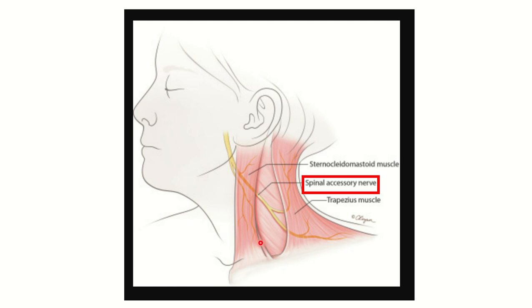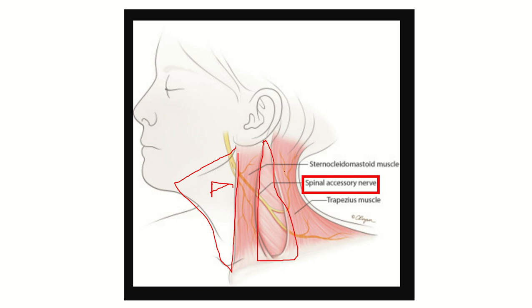We can see a triangular area known as the posterior triangle of the neck, and here is the anterior triangle of the neck. The anterior border of the posterior triangle is formed by the sternocleidomastoid muscle — so the sternocleidomastoid marks the anterior border of the posterior triangle.